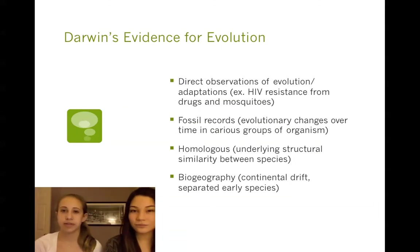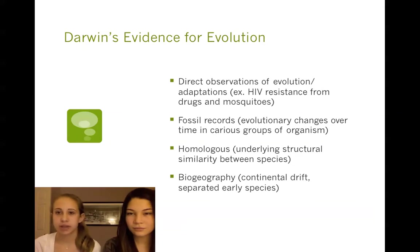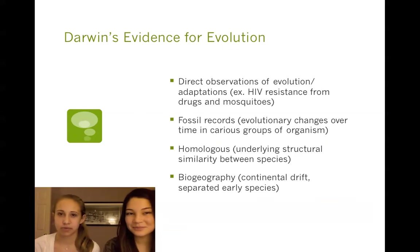Darwin took his evidence for evolution from many sources. He said that direct observations were a source of evolutionary evidence, such as HIV resistance to certain drugs and mosquitoes becoming more resistant to pesticides. He also said that fossil records were evidence because evolutionary changes over time in various groups of organisms could be observed. He said that homologous characteristics, which are underlying structural similarities between species, also proved evolution. And that biogeography, such as continental drift and the separation of early species to different areas, proved evolution too.